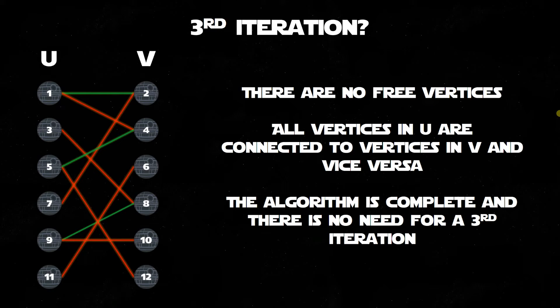As you can see, there is no need for a third iteration, as there are no free vertices, and all vertices in U are connected to vertices in V, and vice versa. This algorithm is complete and produces a maximum matching, a perfect matching.